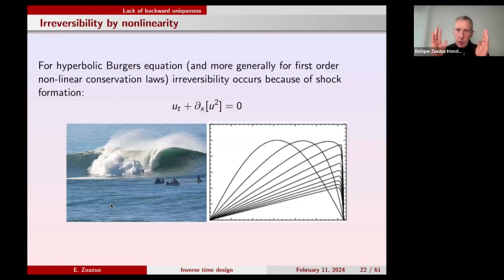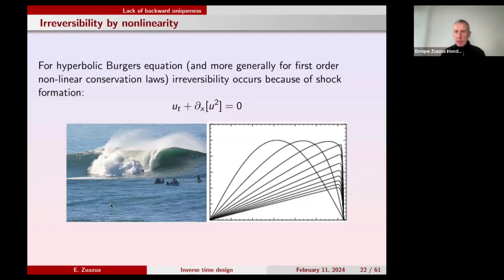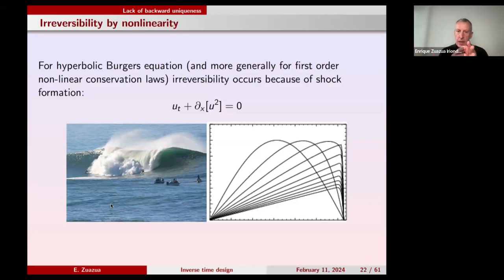So far, we were always talking about models in which backward uniqueness was guaranteed. However, whenever one faces models that can generate singularities, it may well happen that this backward uniqueness is lost and new phenomena arise. The most prototypical model for this is the classical Burgers' equation.